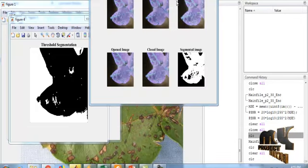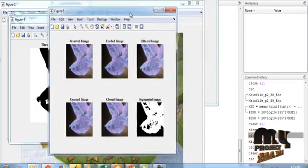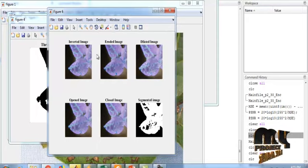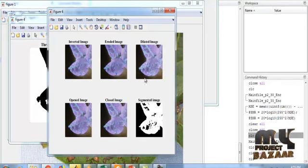After the threshold segmentation, the morphological segmentation is applied. Here, the morphological segmentation has six steps. First one is the inverted image. Then the second one is the eroded image. Then the third one is the dilated image. Then the fourth one is the opened image. Fifth one is the closed image. Then the final segmentation result is the sixth one.